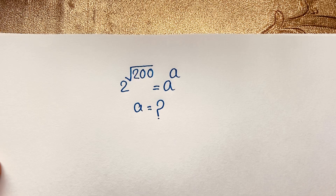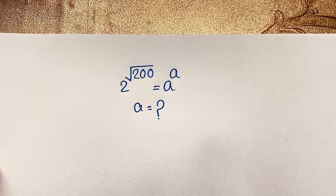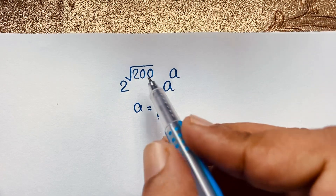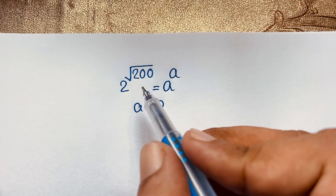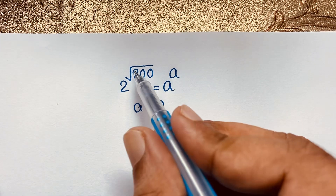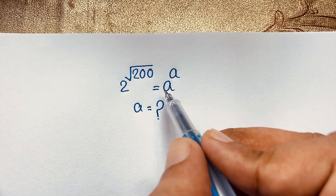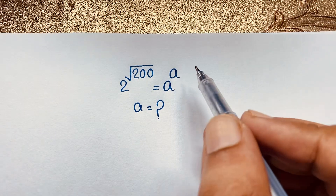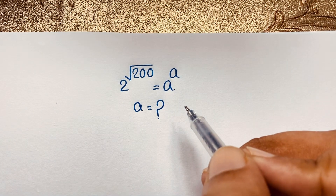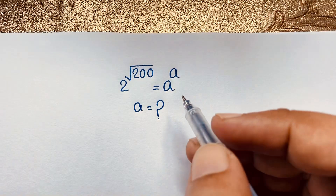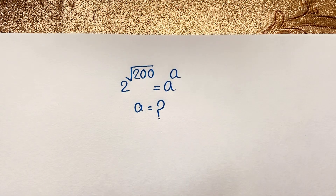Hello everyone, welcome to Rasha's Classroom. Today we will solve an interesting vital exponential math Olympiad question, which is 2 to the power √200 is equal to a to the power a. What is a? How to solve this interesting math Olympiad question?